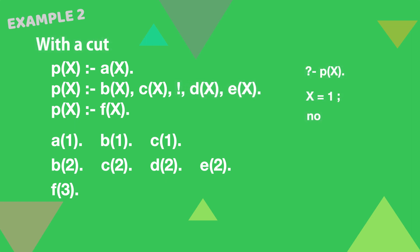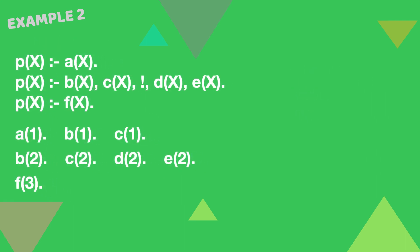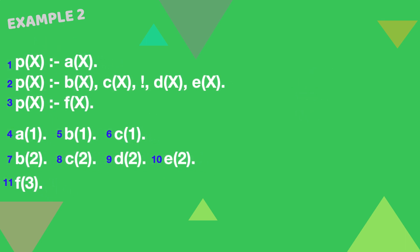Let's look at this search space. First we'll number the clauses, this time there are 11. The initial goal of p(X) matches clause 1, giving a new sub-goal. That matches clause 4, with one variable binding.